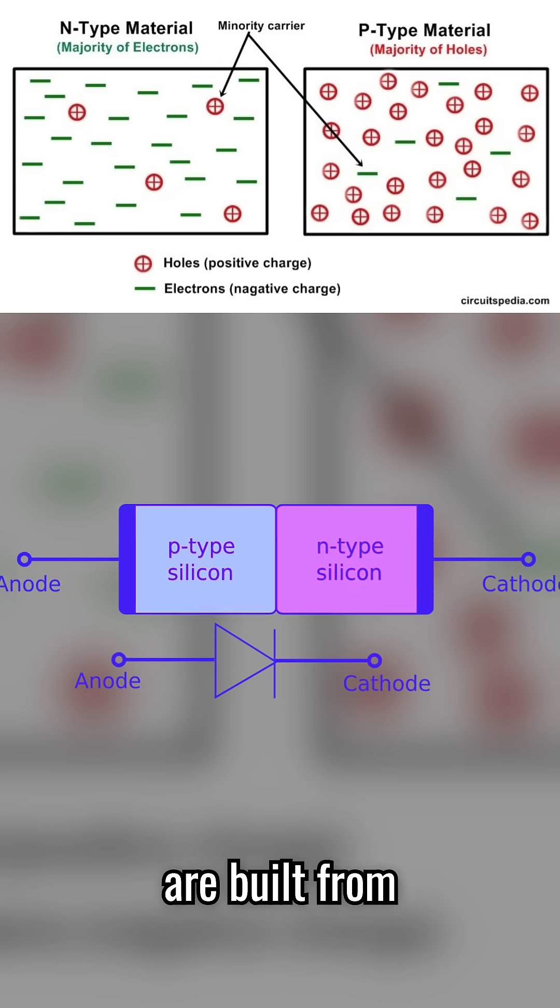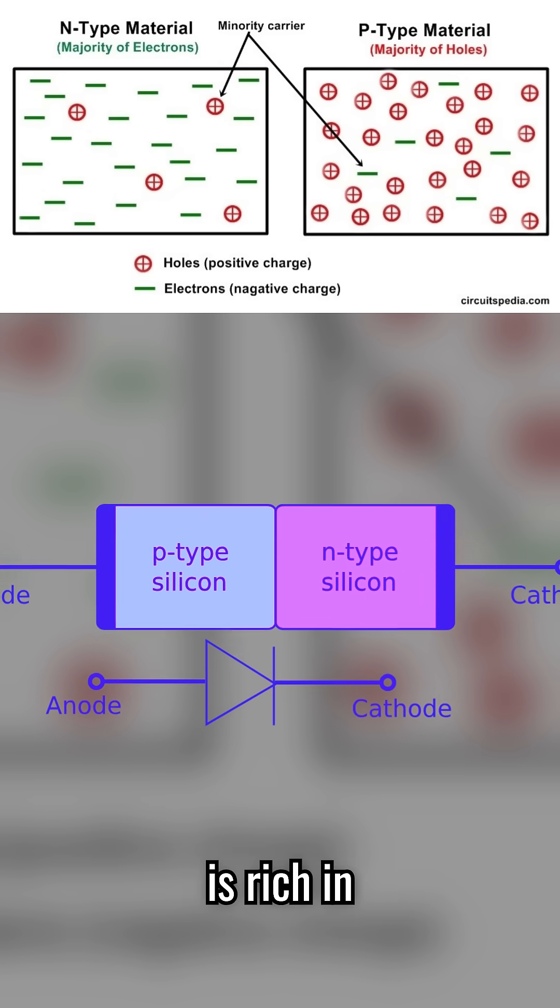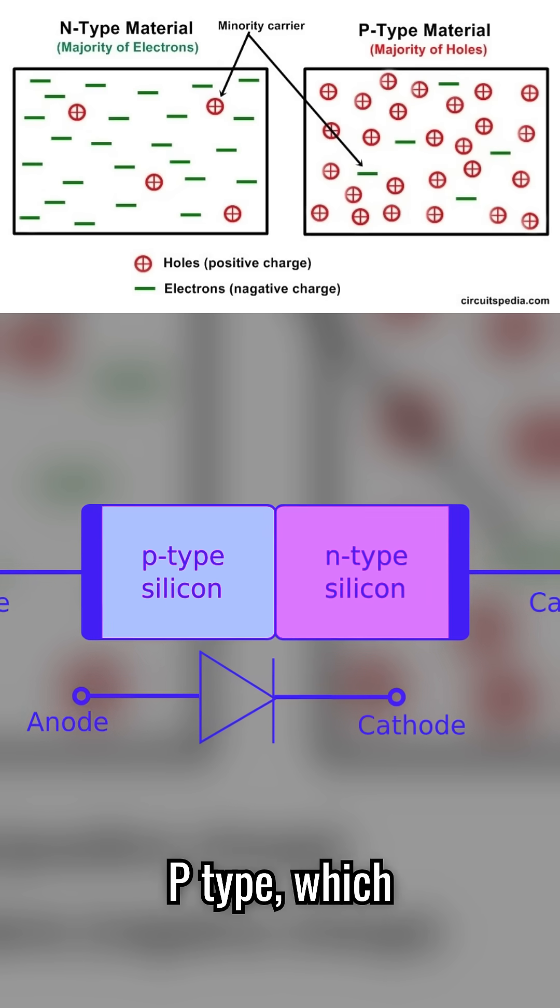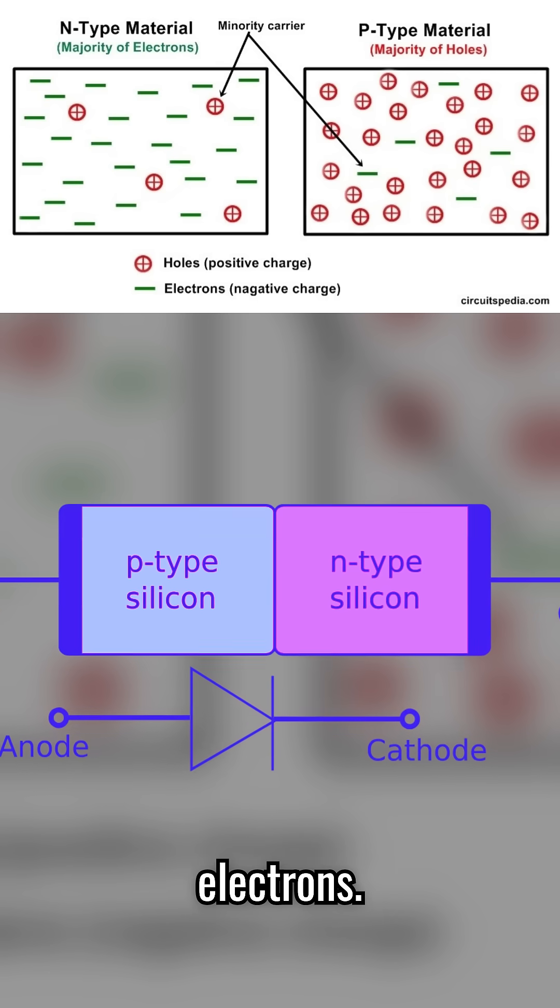Modern diodes are built from two types of semiconductors. N-type, which is rich in electrons, and p-type, which is rich in holes or has an absence of electrons.